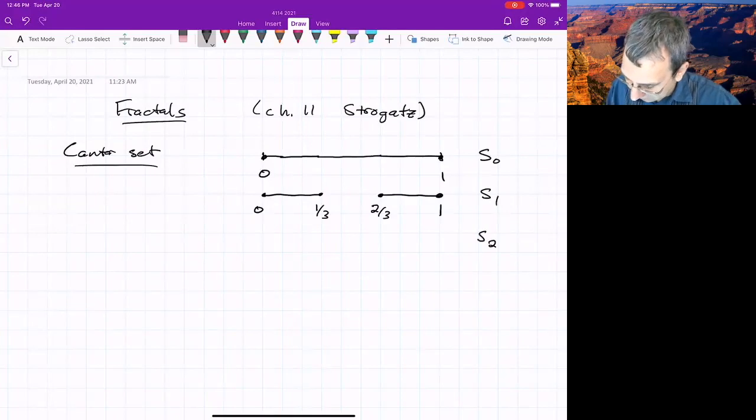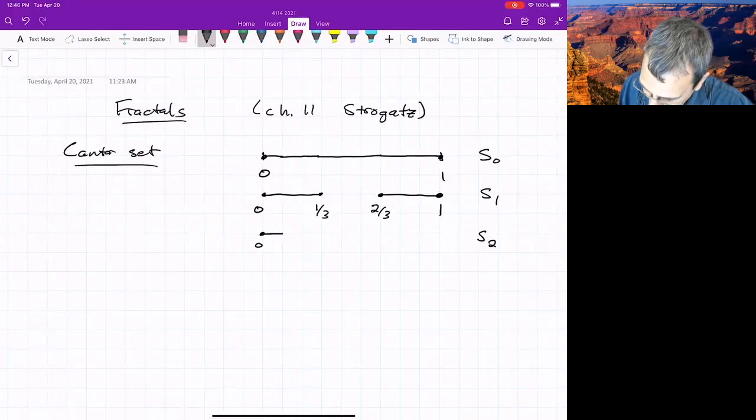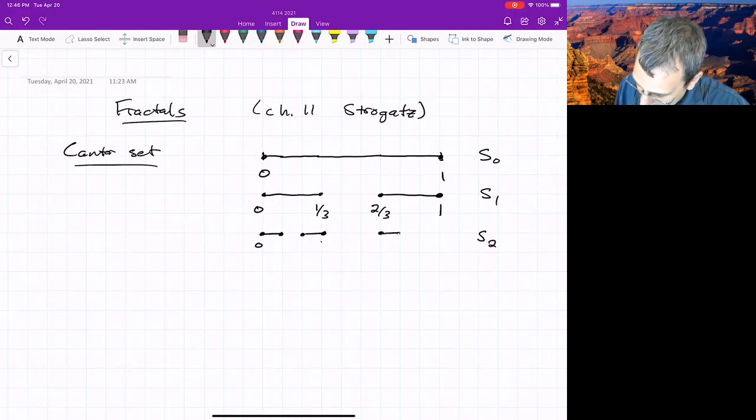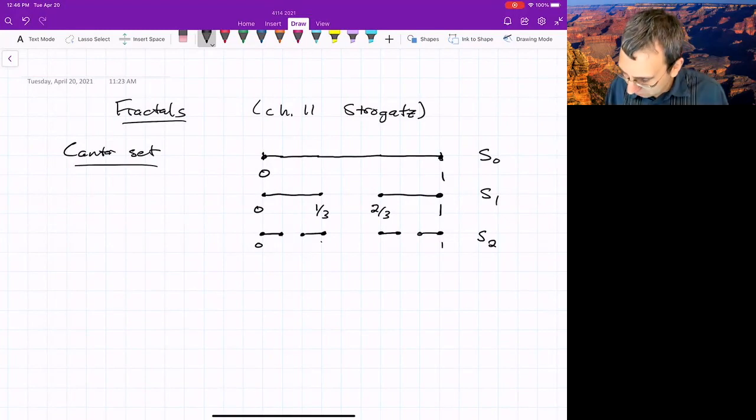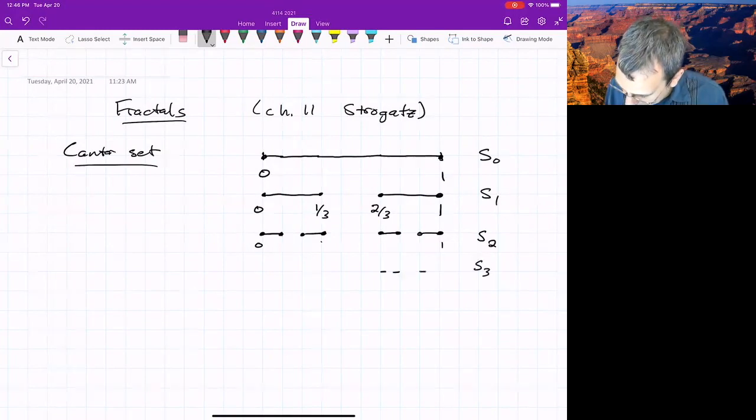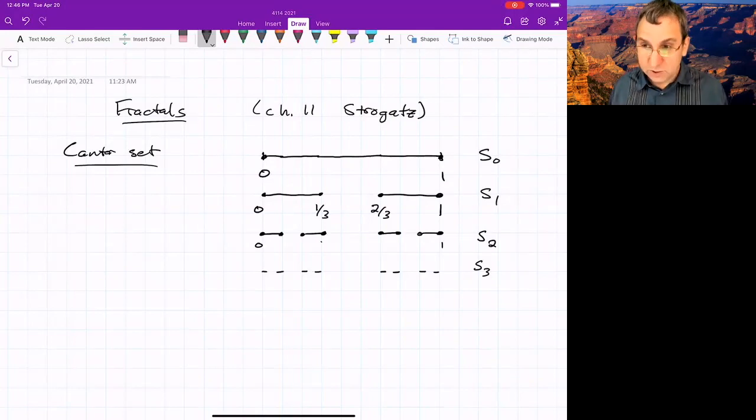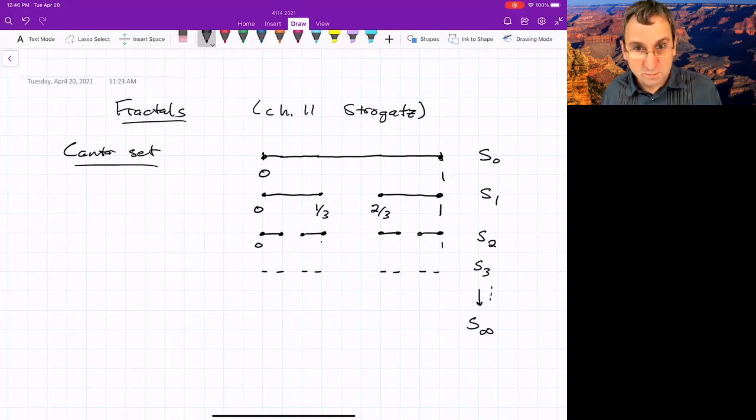So at S2, for each of the new segments, we remove the middle third. And hopefully you see where this is going. We keep removing a middle third over and over again. Just keep on going. Eventually, what you'll get, if you were to follow this down to what we might call S infinity, you're going to have a set of points. So this is also called C, the Cantor set.